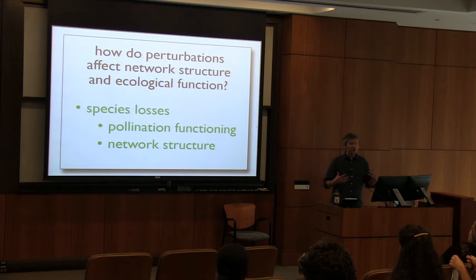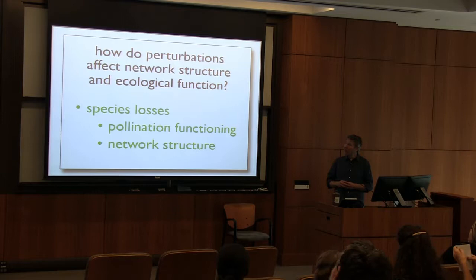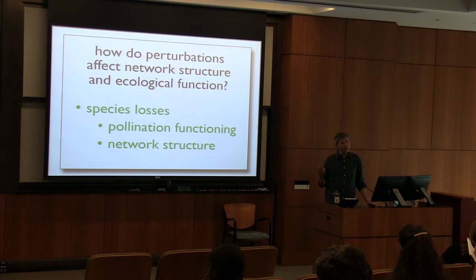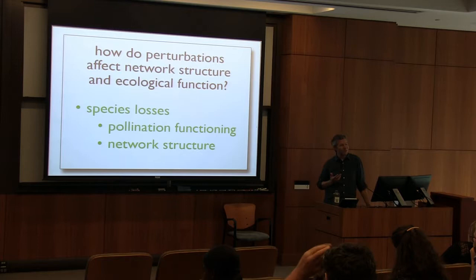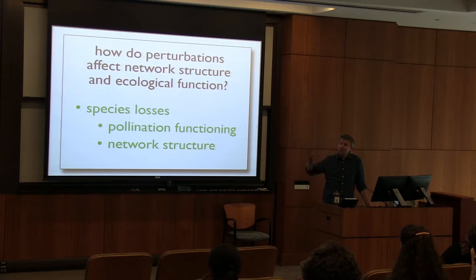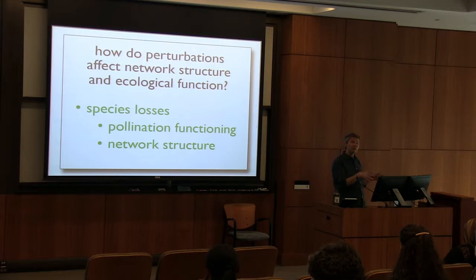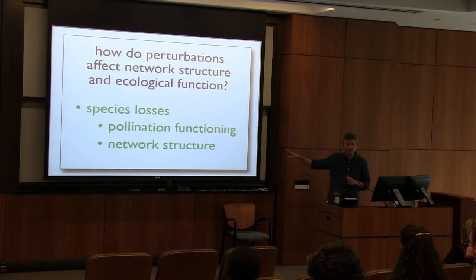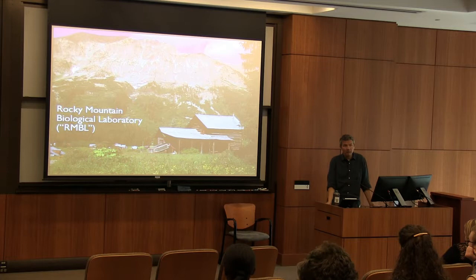It's really cool and intriguing that we see these structural consistencies in these networks. We're interested in whether a particular structure helps these networks respond to perturbation more quickly, and whether it affects how these ecosystems function. We have more and more perturbations to ecological systems with ongoing anthropogenic environmental change. One important environmental change is the loss of species — not just global extinctions, but also when a species goes extinct locally. What are the consequences for pollination functioning and for the structure of those networks?